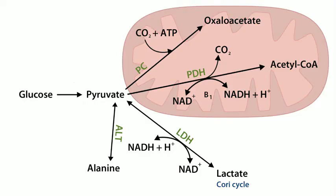There are actually four different things you can do with pyruvate. Pyruvate can be converted to oxaloacetate using the enzyme pyruvate carboxylase — that's the first step of gluconeogenesis. Pyruvate can be converted to acetyl-CoA using pyruvate dehydrogenase, which gets fed into the TCA cycle. Pyruvate can also be converted to lactate, which occurs in anaerobic respiration.